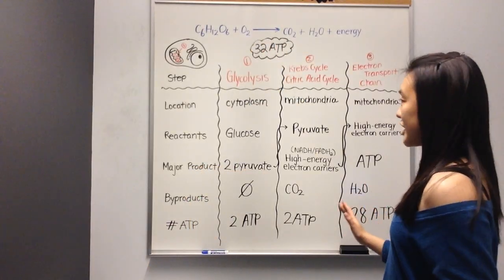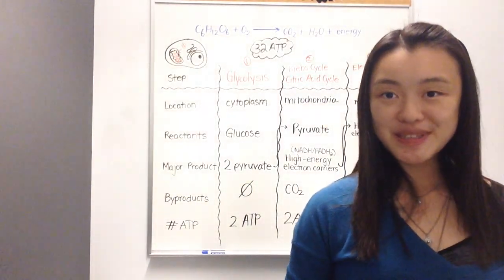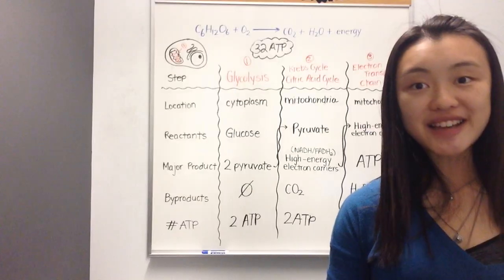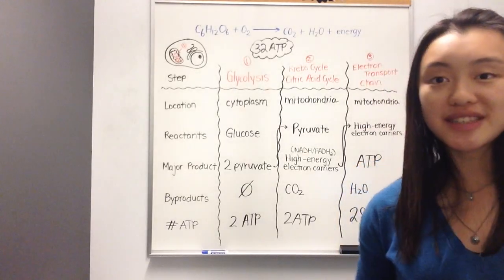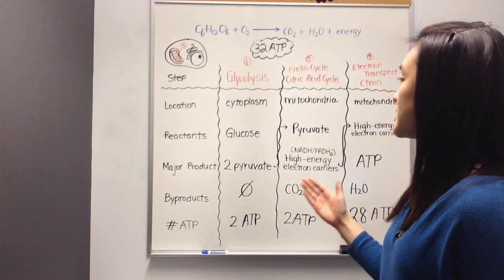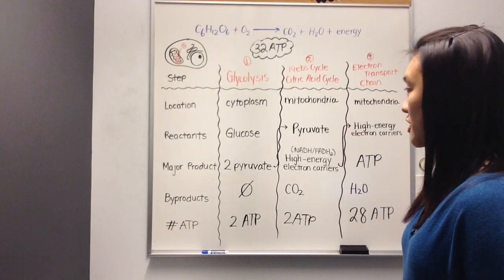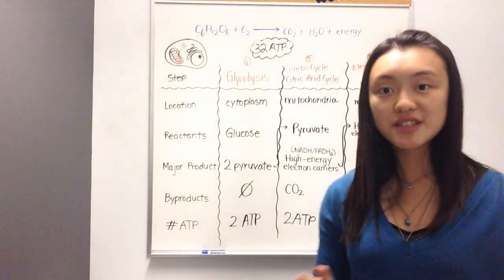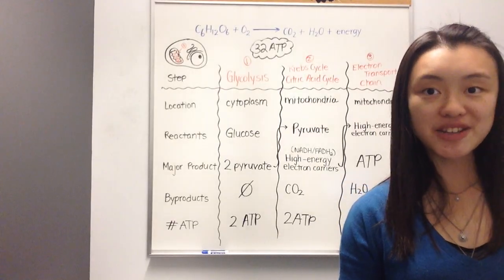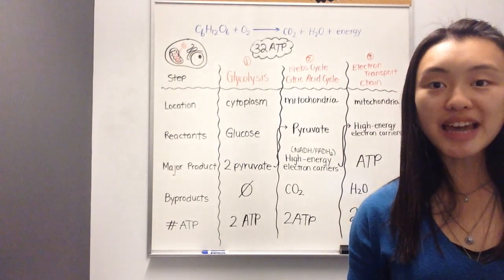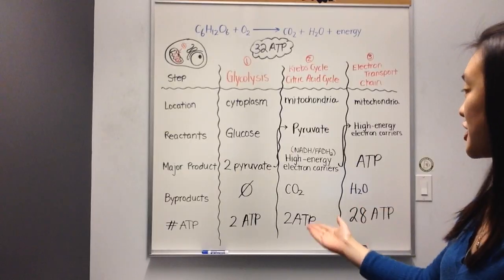Let's do a full recap of cellular respiration. First of all, there's three steps. We have glycolysis, the Krebs cycle, or the citric acid cycle, followed by step 3, which is the electron transport chain. First, we started in the cytoplasm for glycolysis, where we went from glucose into two molecules of pyruvate. The pyruvate turned into high-energy electron carriers, and this step happened in the mitochondria. There was some ATP produced during both reactions.